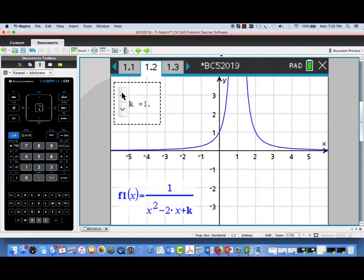Let's try some other values of k. I'm going to increment k upwards, and we can see that that vertical asymptote disappears for k equals 2, 3, and so on, and we get this flatter and flatter looking curve with a maximum at 1.